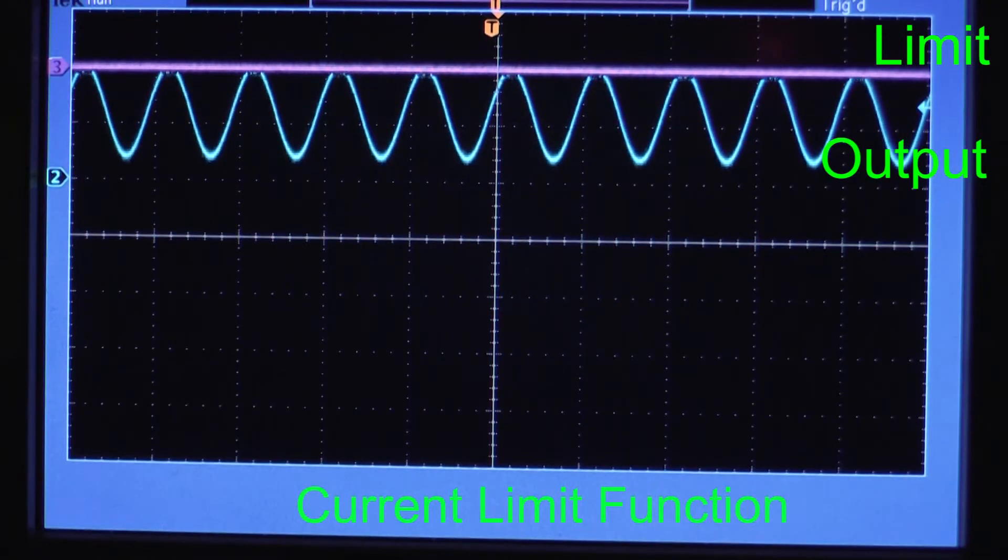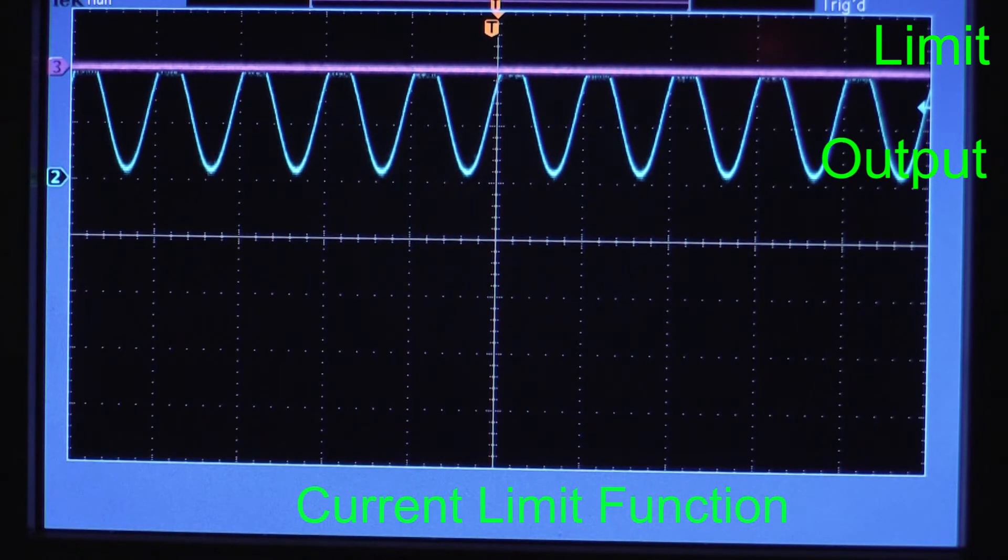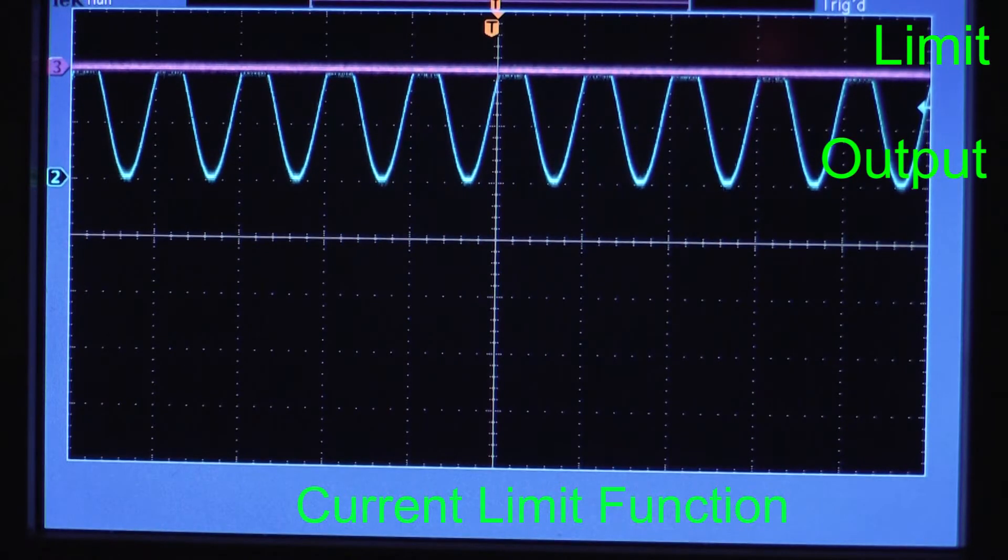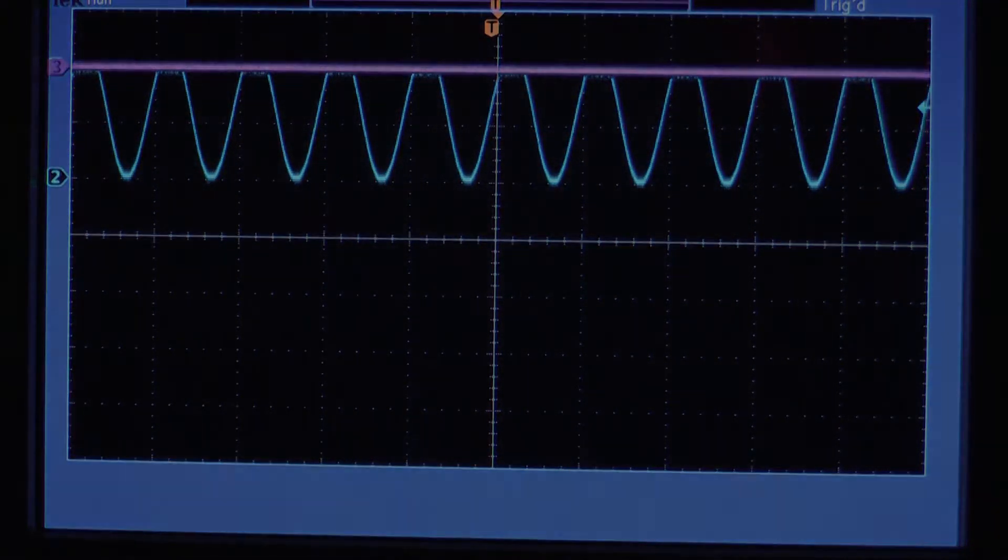The user determines the maximum setting, and the output current is kept from exceeding that level. Some limit circuits cap the current at the max level and keep operating. An active current limit circuit will disable the laser diode driver current.